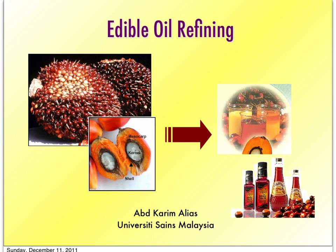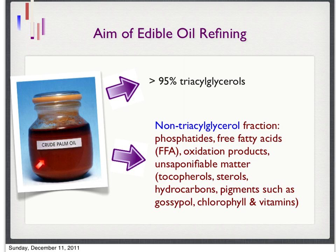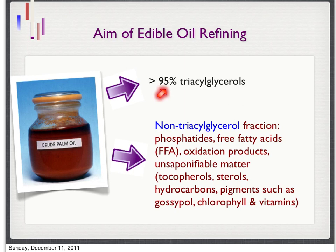In this picture, a sample of crude palm oil in the bottle — you can see it has a very dark orange or dark red color and is quite viscous. The crude palm oil has separated into two layers: the bottom layer is the sediment, sometimes called foots, and the top layer is the oil. In crude palm oil, it contains around 95% triacylglycerols or triglycerides — this is the actual part of the oil we want.